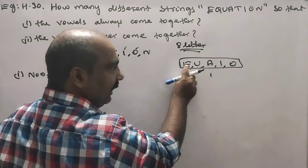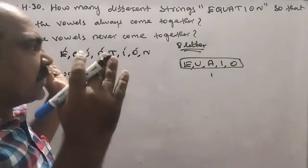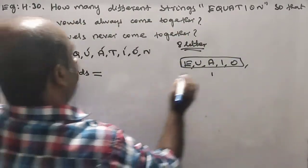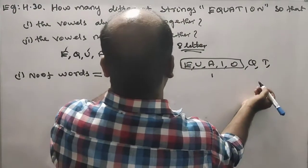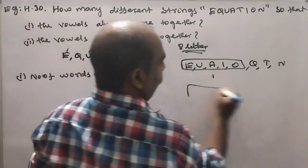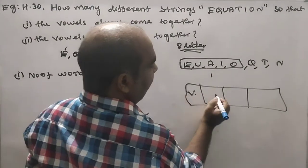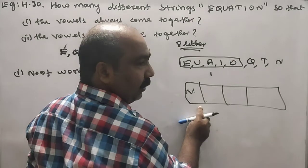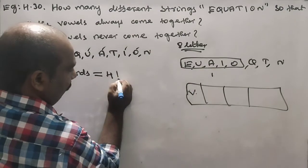So these 5 vowels — E, U, A, I, O — come together as one letter. The remaining consonants are Q, T, N. So now we have 4 units total: the vowel group plus Q, T, N. That gives us 4 factorial arrangements.